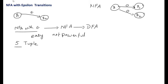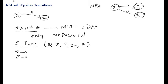An NFA with Epsilon transitions can be represented with a 5-tuple notation: (Q, Sigma, Delta, q0, F). Q is the set of finite non-empty states, Sigma is the input alphabet, Delta is the transition function, q0 is the starting or initial state of the finite automaton, and F is the set of final states.